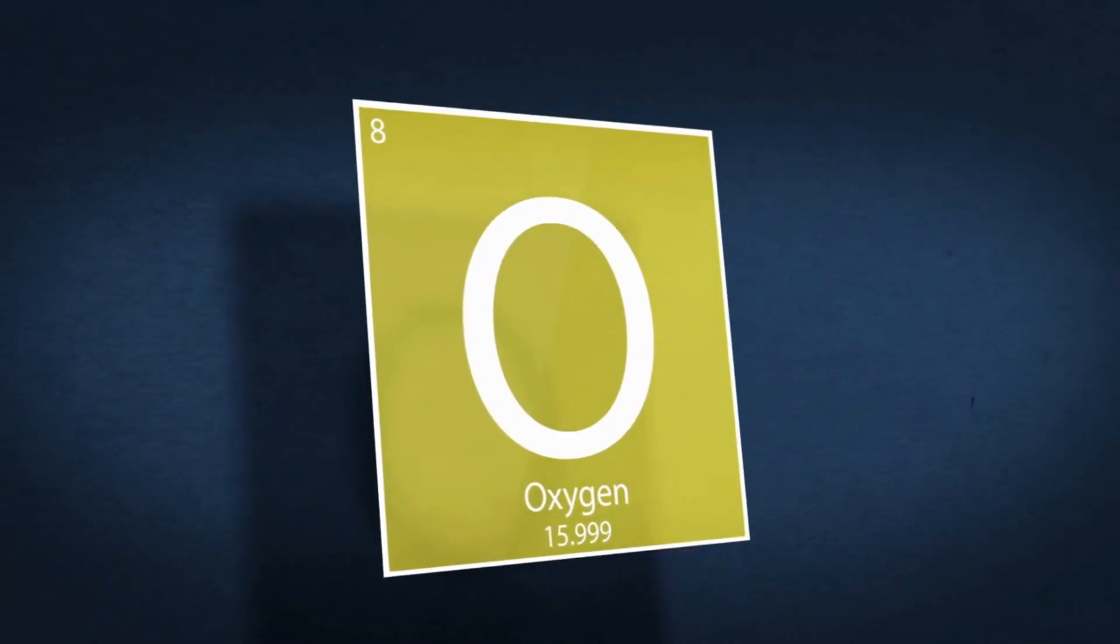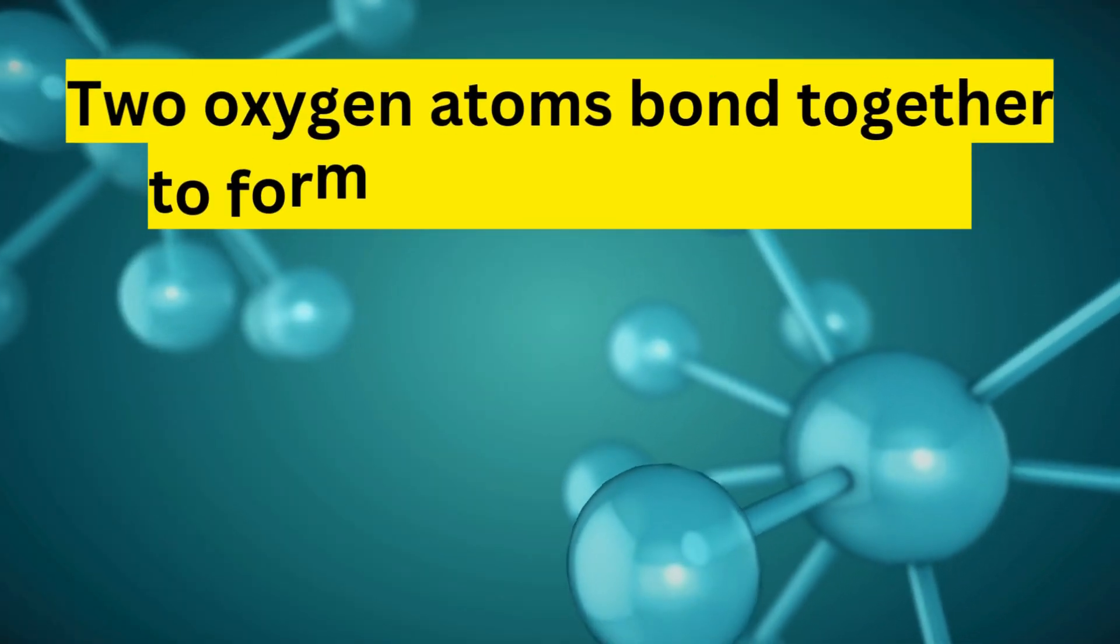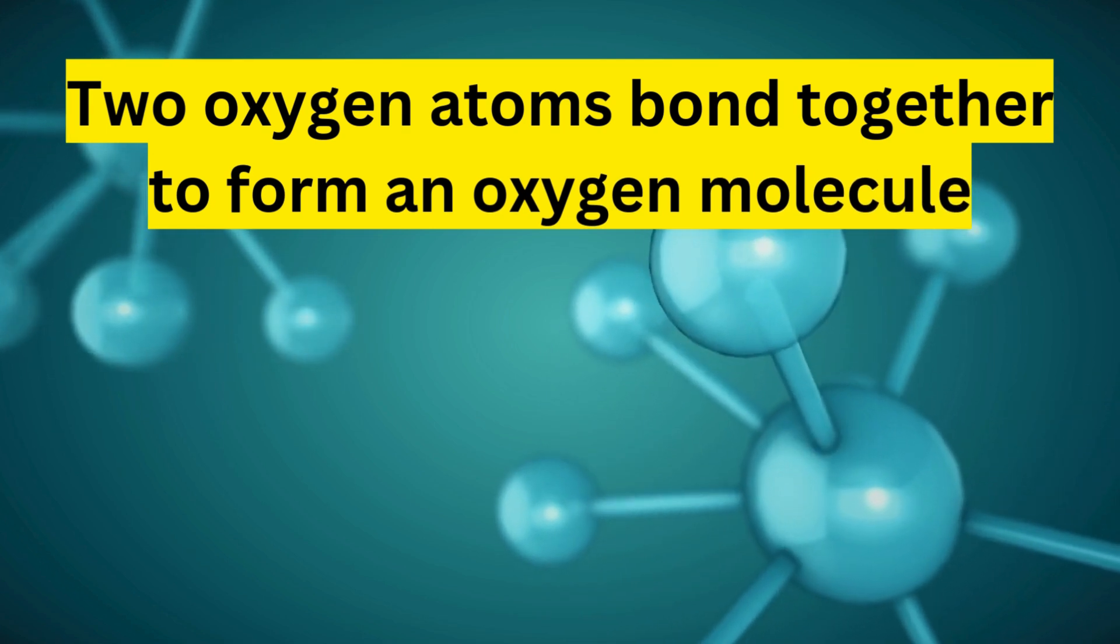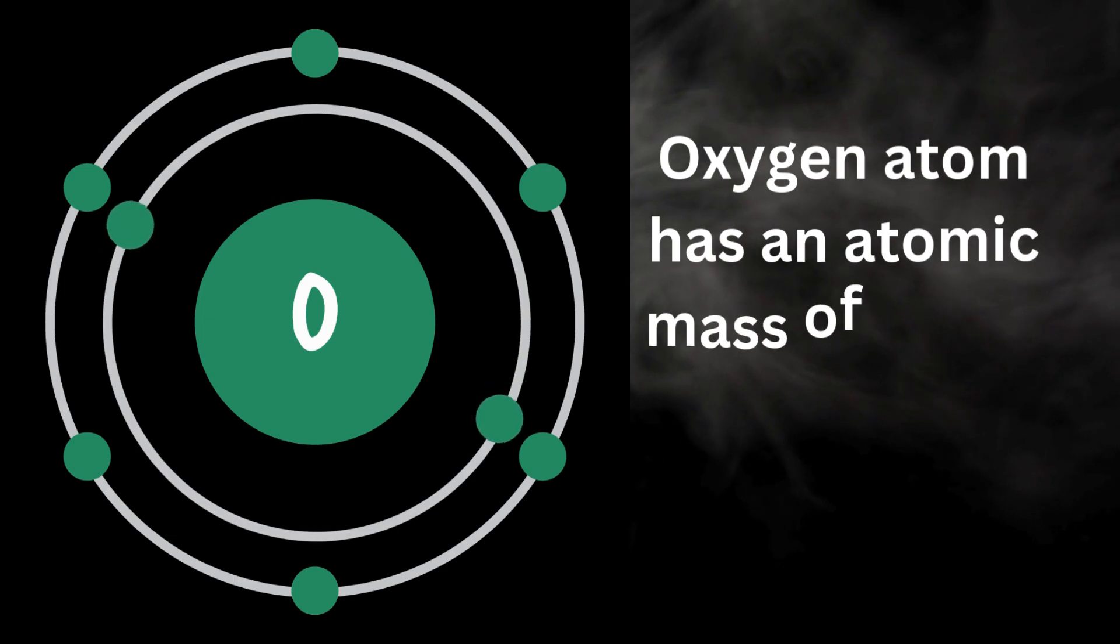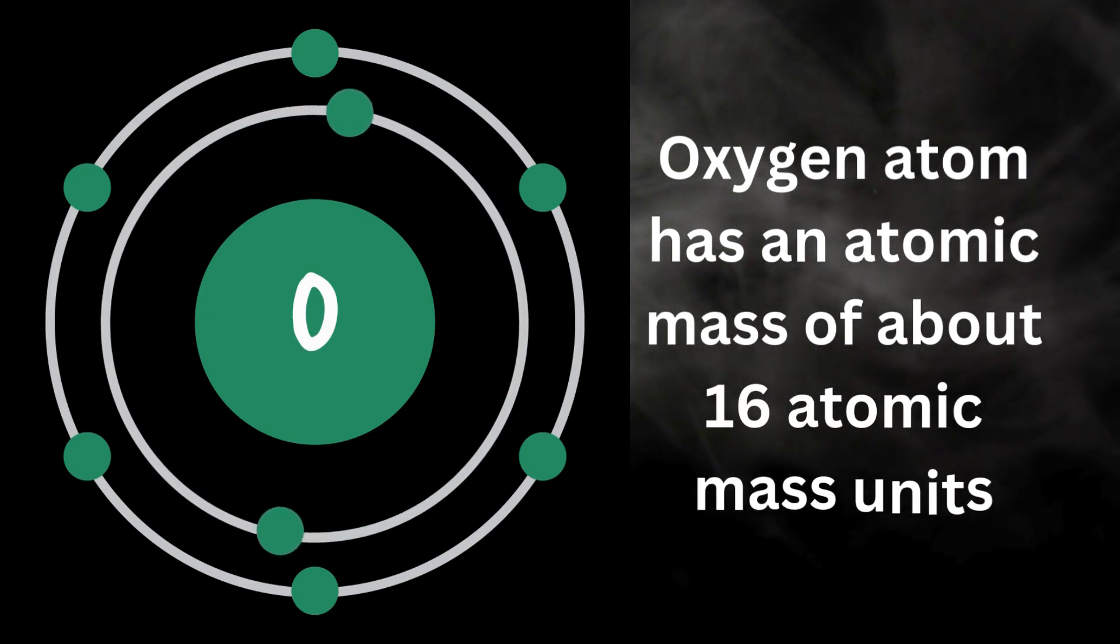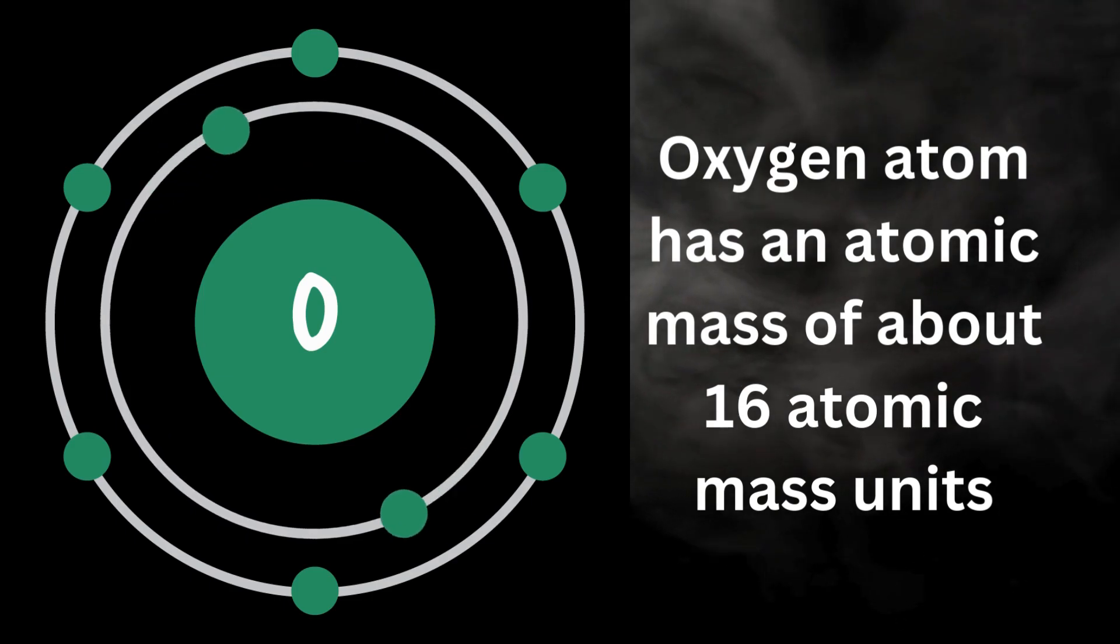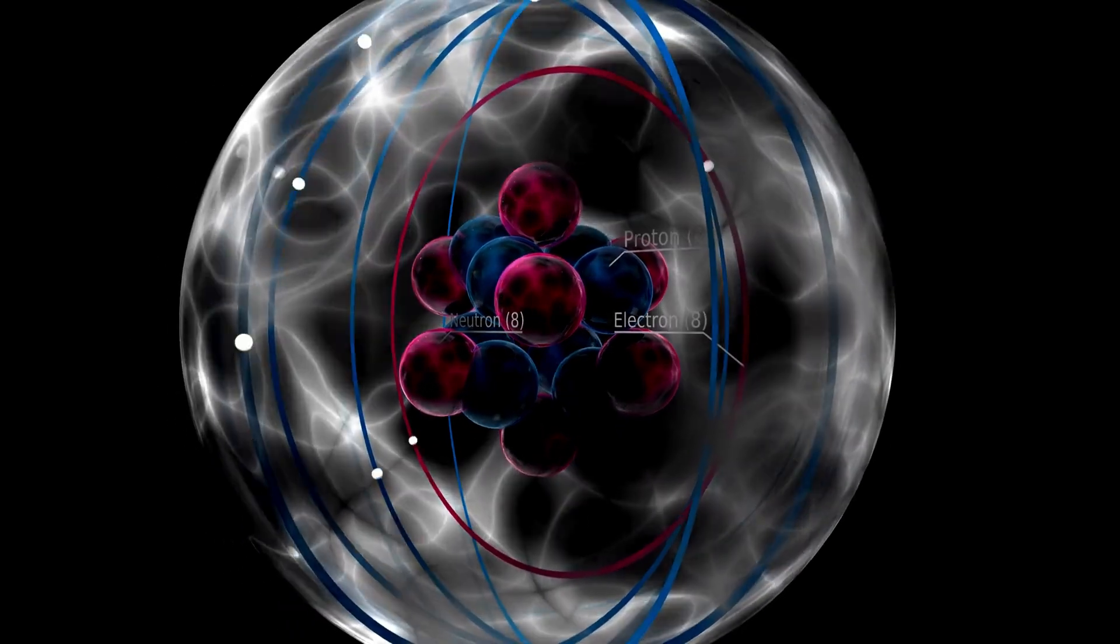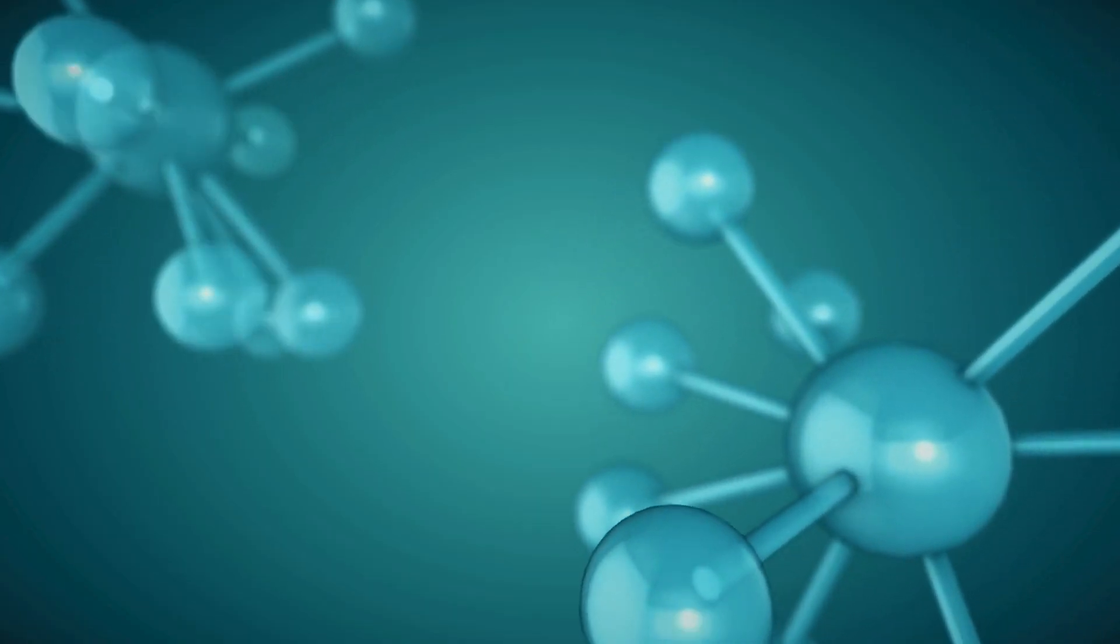Oxygen exists as a diatomic molecule, which means that two oxygen atoms bond together to form an oxygen molecule, represented as O2. Each oxygen atom has an atomic mass of about 16 atomic mass units, so you might think that two oxygen atoms would simply weigh 32 atomic mass units, right? But here's the twist. The actual weight of the oxygen molecule O2 is slightly less than 32 atomic mass units. Why is that?